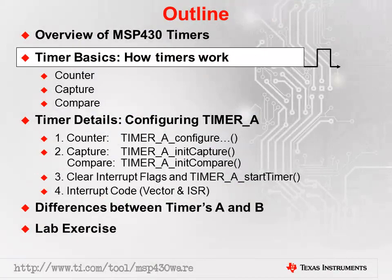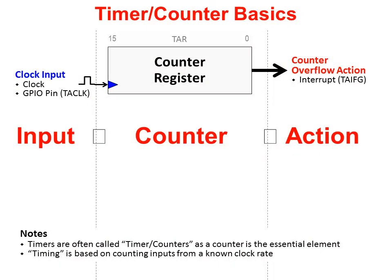Before we discuss the details of Timer A, let's begin with a quick overview describing how timers in general work — specifically, how a timer is constructed using a counter, and then the capture and compare capabilities found in many timers. A counter, seen in the middle of this slide, is the fundamental hardware element found inside of a timer. The other essential element is a clock input, and when the timer finishes, it can generate some action, like an interrupt.